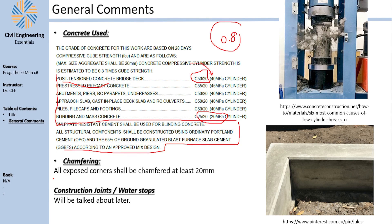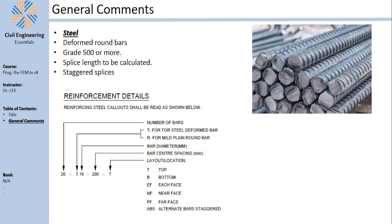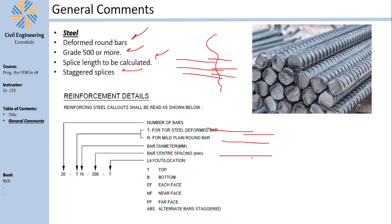Chamfering is something we typically do in bridge engineering: when you have a corner, you chamfer it with at least 20 mm. A chamfer eliminates a sharp corner — a fillet is also possible but a chamfer is easy to implement using a triangular piece in your formwork. There are also requirements for construction joints and water stops. For normal reinforcement steel, we use round deformed bars, Grade 500 or more. Splice length must be calculated and splices must be staggered — you cannot splice all steel at one position as this creates a weakness.